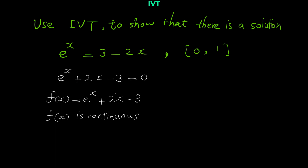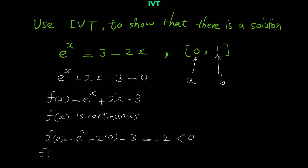Now that we've checked continuity, we need to choose a and b. Here, a and b are simply the endpoints of the given interval: 0 and 1. So we choose a = 0 and b = 1, and we calculate f(0) and f(1). For f(0): plugging in 0 gives e to the 0 plus 2 times 0 minus 3. Since e to the 0 is 1 and 2 times 0 is 0, we get 1 minus 3 equals negative 2, which is negative.